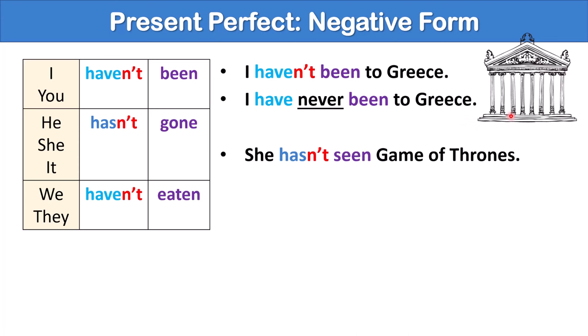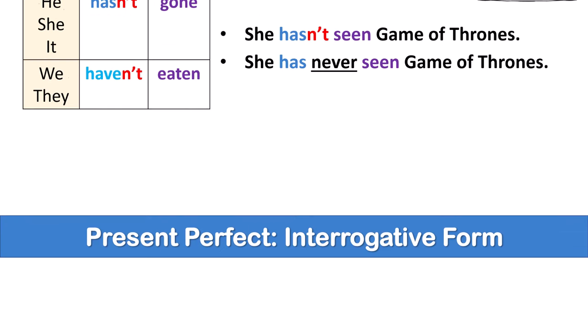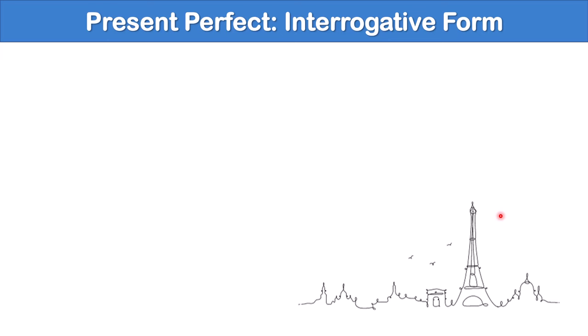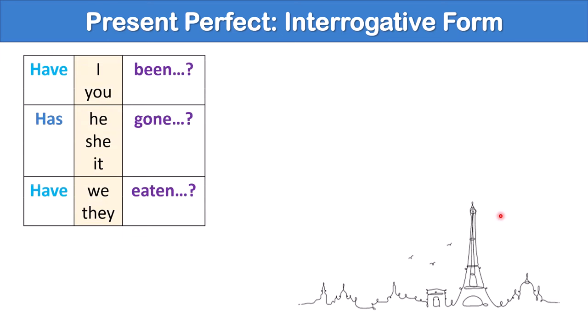Another example. She hasn't seen Game of Thrones, or she has never seen Game of Thrones. Now let's talk about the interrogative form of the present perfect. This time, we begin with have or has, then the subject, and then the past participle.